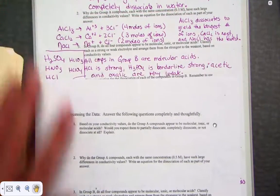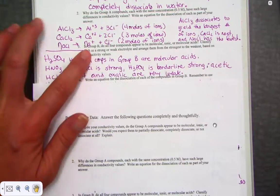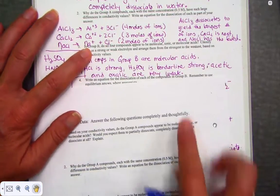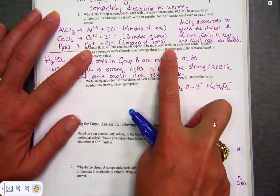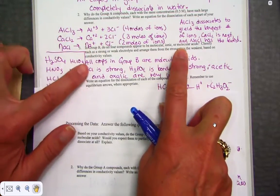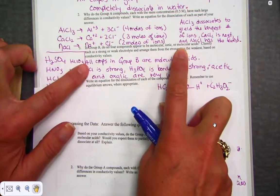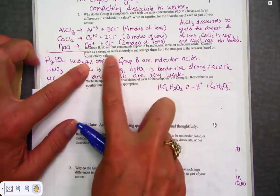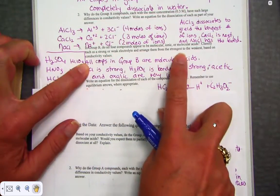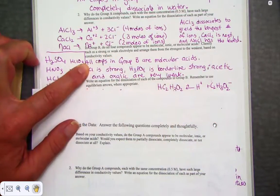Part B. In group B, do all four compounds appear to be molecular, ionic, or acids? We called those acids, didn't we? Classify each as strong or weak, and arrange them from the strongest to the weakest based on their conductivity values.